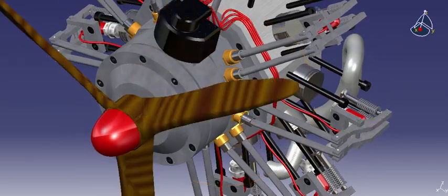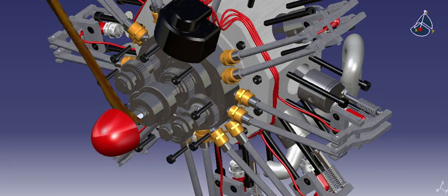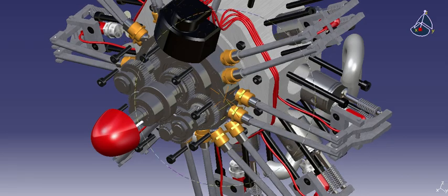Now I want to show the valve steering. Therefore I have to hide the housing.